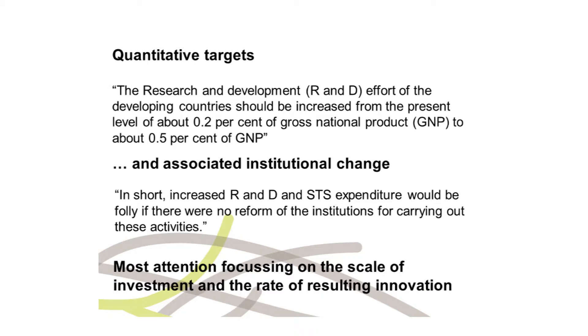One recommendation focused on a particular indicator central to science and technology policy — the proportion of gross national product dedicated to investment in research and development. To be fair to our colleagues, they also talked about institutional changes that would ensure this expenditure was actually used for innovation, not just for new ideas, but for social change. But despite their attention to qualitative as well as quantitative recommendations, most of the debate subsequently focused very much on getting more investment into research and development.